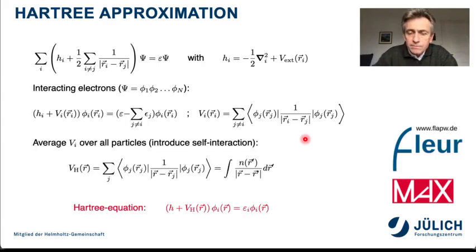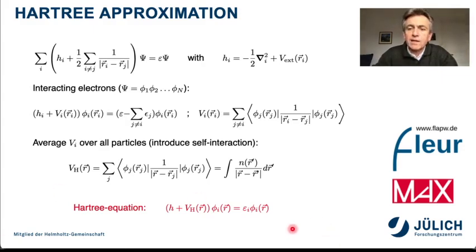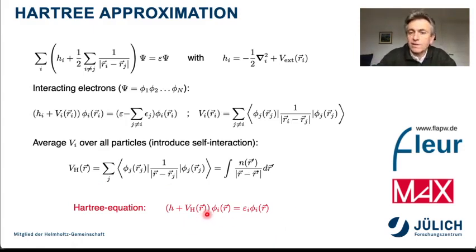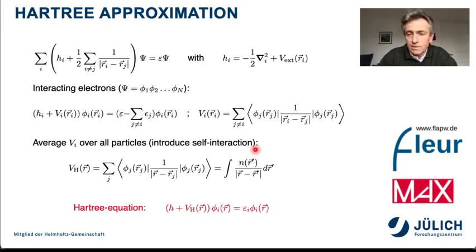What Hartree suggested is to average over all particles, approximating this potential to make it particle-independent. With this so-called Hartree potential you arrive at the Hartree equation, which looks like a Kohn-Sham equation without an exchange-correlation potential. This means that what has to be included in the exchange-correlation potential is the self-interaction, which subtracts the interaction of the particle with its own density.